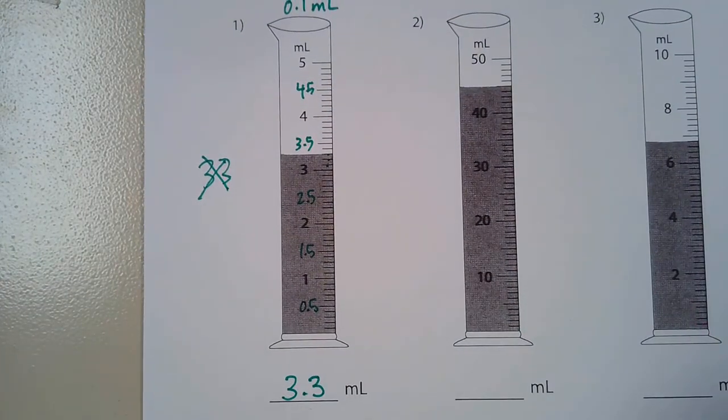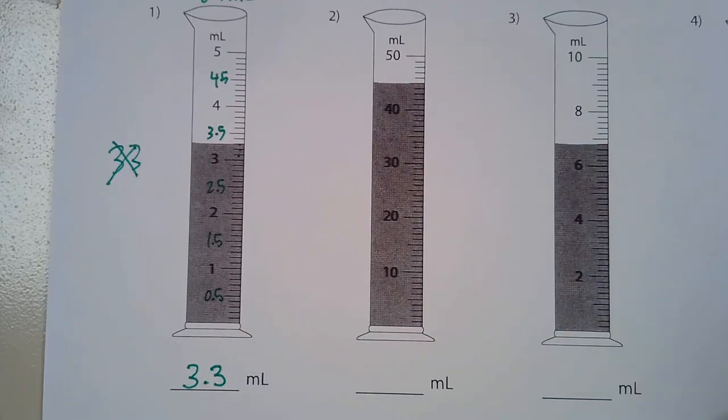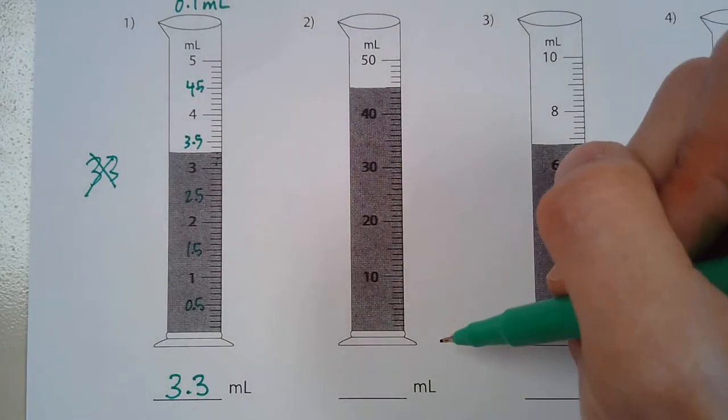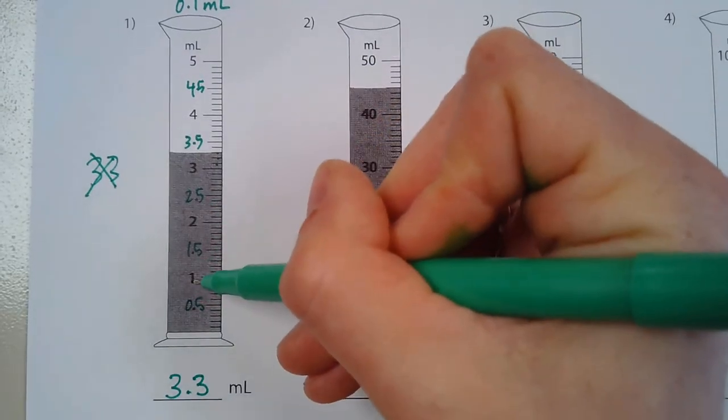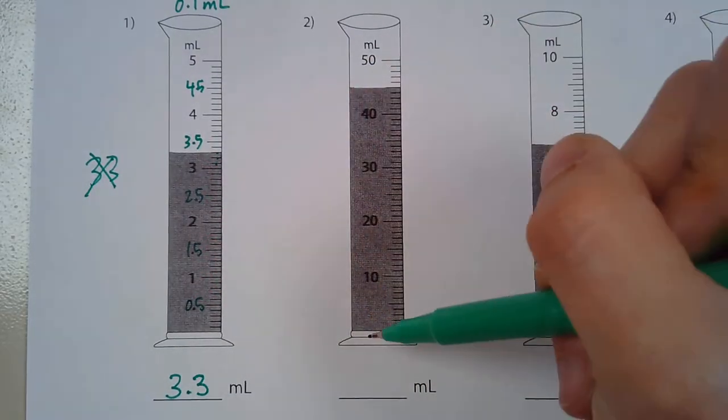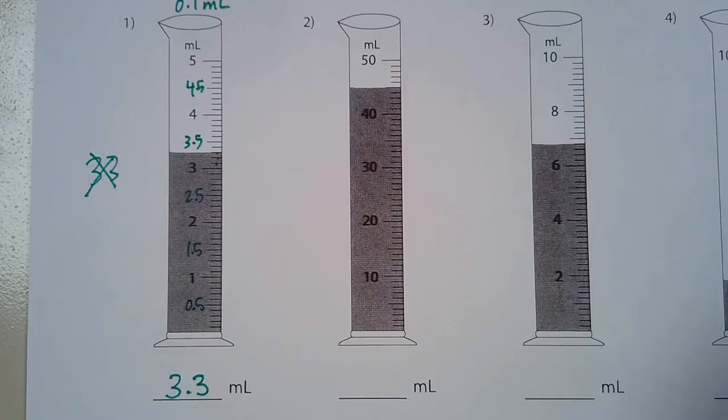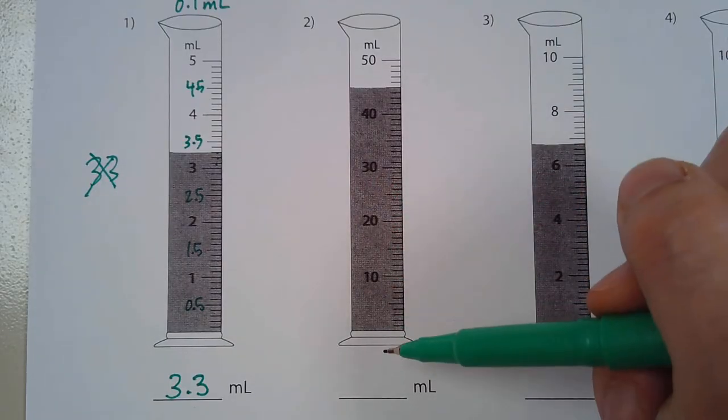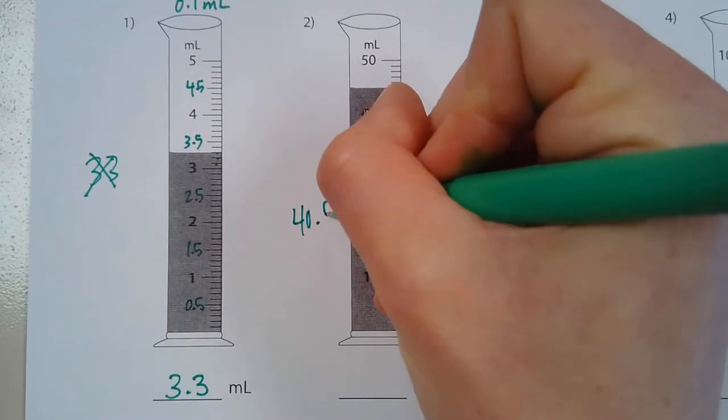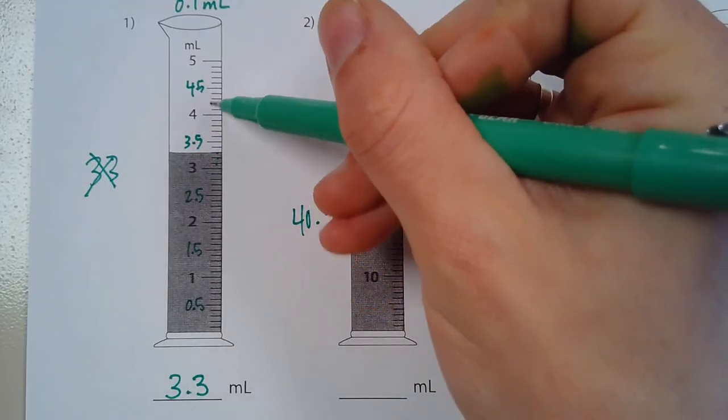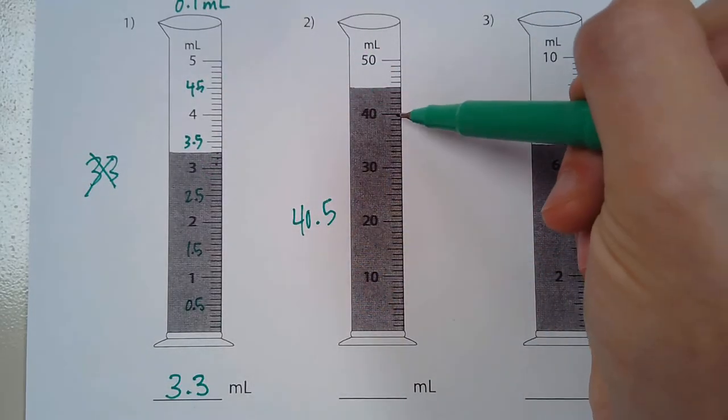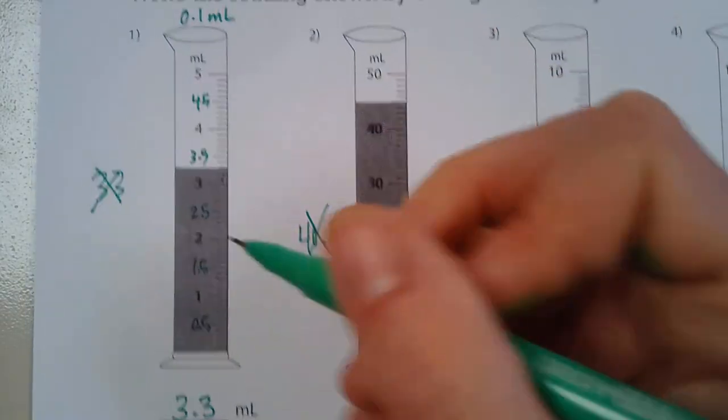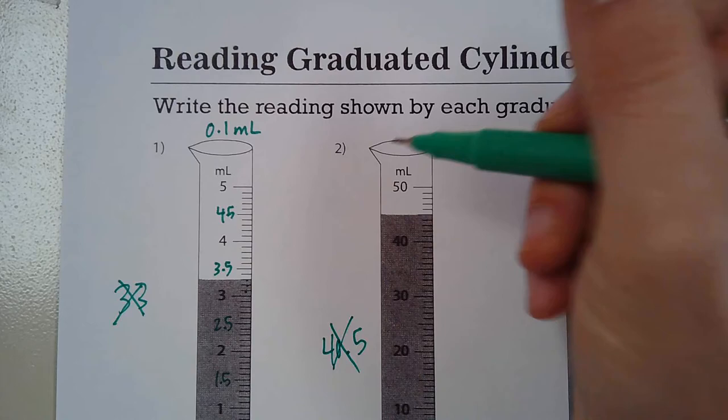This next one has a different scale. So if you notice this one over here is 1, 2, 3, 4, this one's 10, 20, 30, 40. And so I've had some students turn this in with the answer 40.5 because well like this one in between would be 0.5 and so they think well it's 40.5. But this one is not a scale of 0.1, it's a scale of 1.